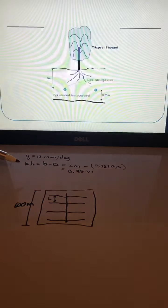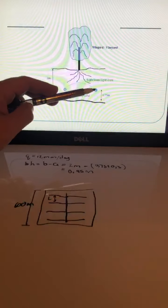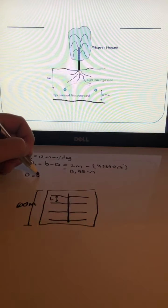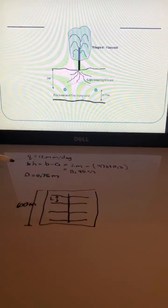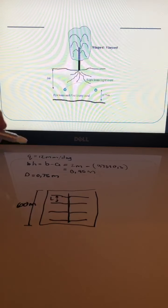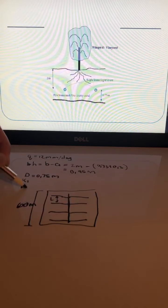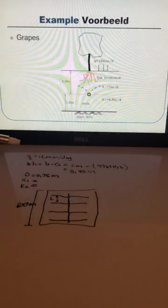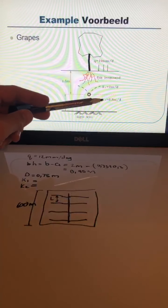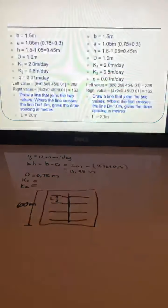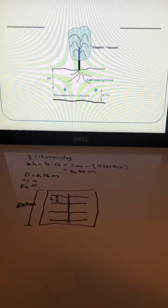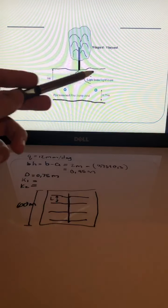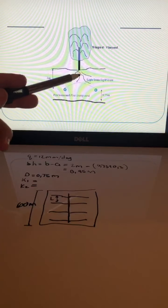Another value given is d, the distance underneath your drain, which is 0.75 meters. Then you also need k1 and k2. In this example, unlike the previous one, those values aren't given on the sketch — instead you're told the soil types: a light loam and a fine loamy sand.